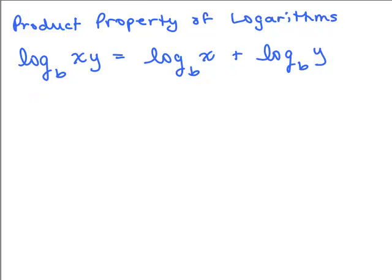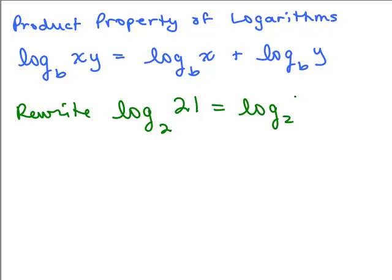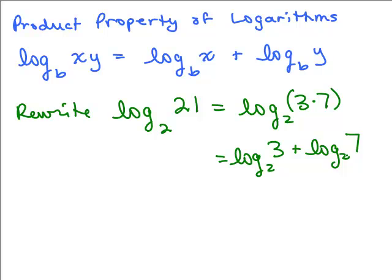All right, so how about I rewrite log base 2 of 21? Well, if I wrote 21 as 3 times 7, what it's saying is that'll end up being the same thing. This is the log base 2 of 3 plus the log base 2 of 7, for instance.